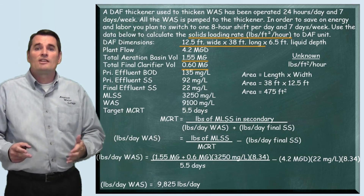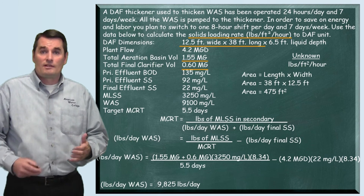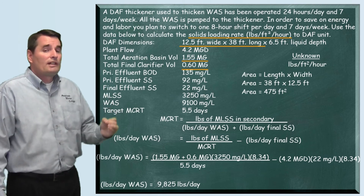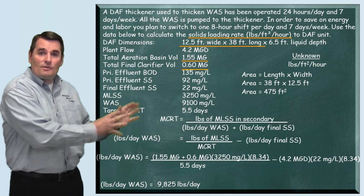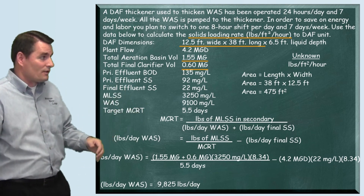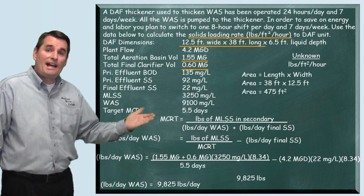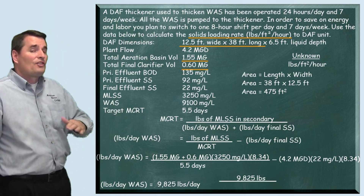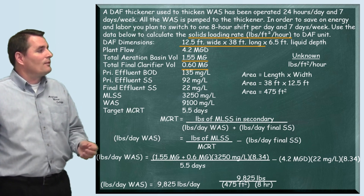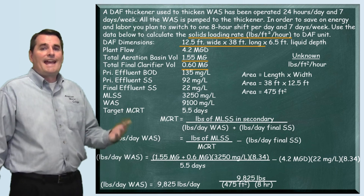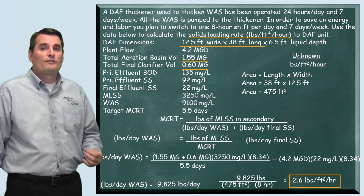The problem has us doing a change in operation. This is how many pounds per day we're producing going to the thickener, but rather than working on a 24-hour, seven-day-a-week cycle, we're switching to eight hours per day, still seven days a week — cramming all of this into an eight-hour shift. So we take the 9,825 pounds per day, divide by the eight-hour shift and by the surface area of 475 square feet, and we find that the solids loading rate is 2.6 pounds per square foot per hour.